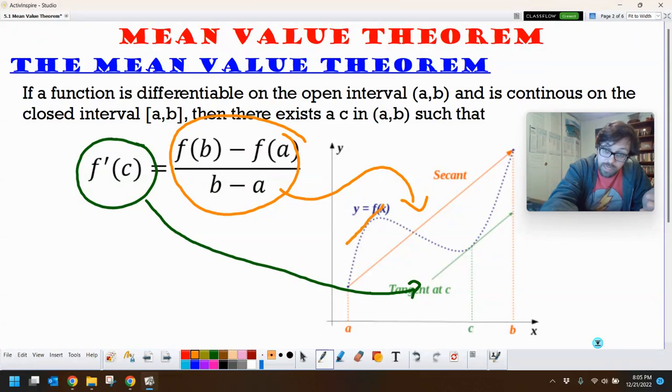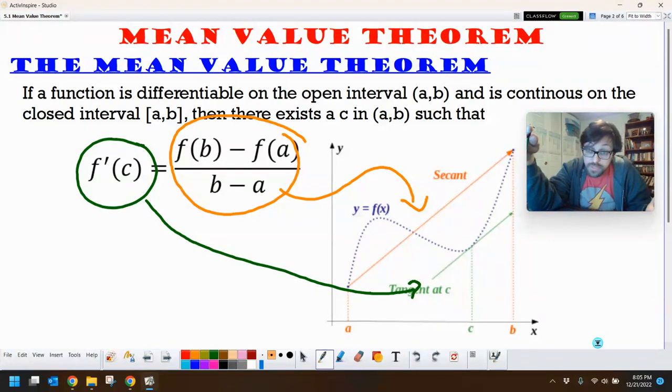There's potentially even another spot, like over here, that's also parallel to the secant line. That is also tangent there. So we get multiple C's, but we're guaranteed at least one.